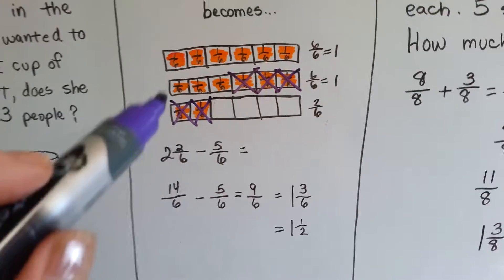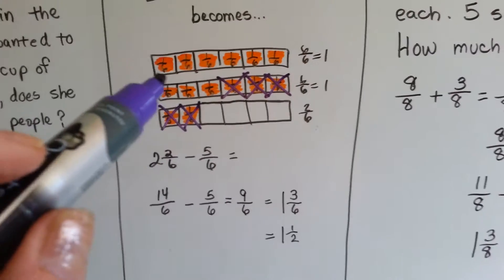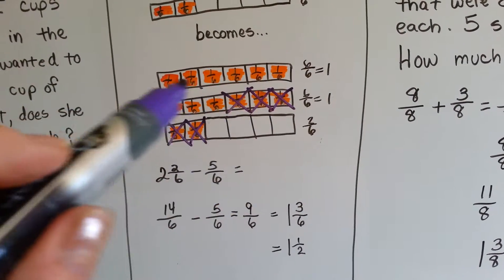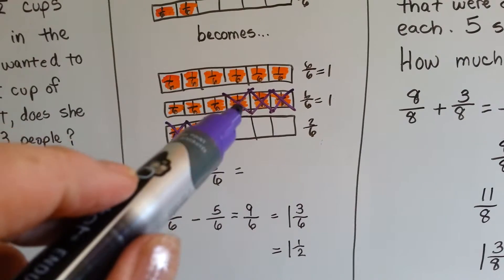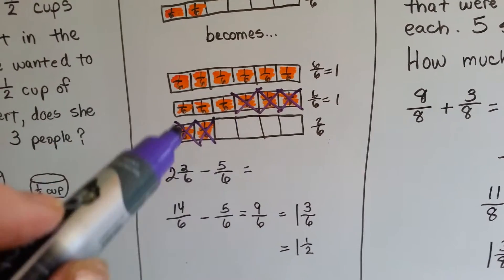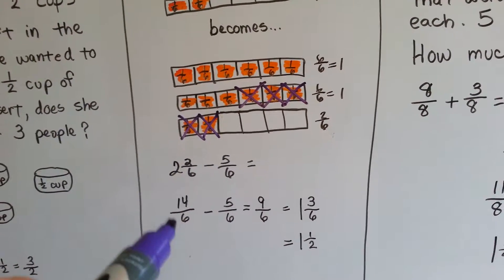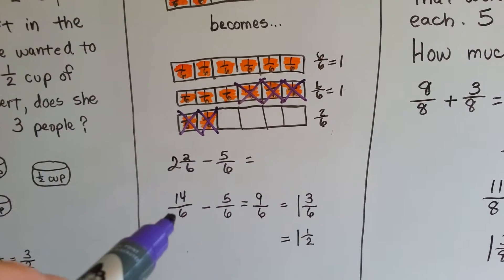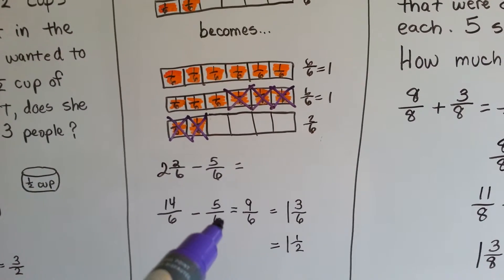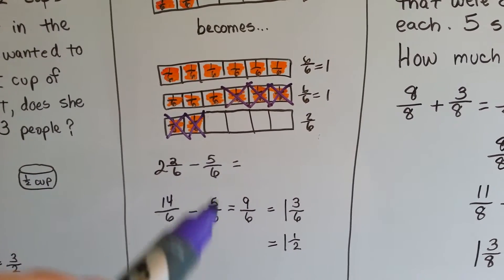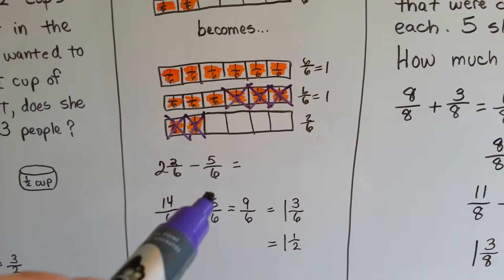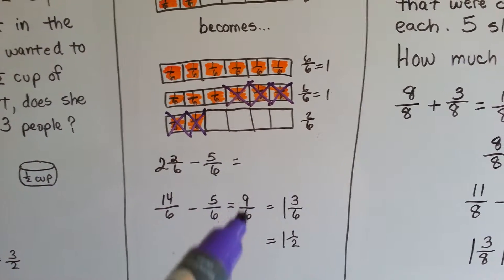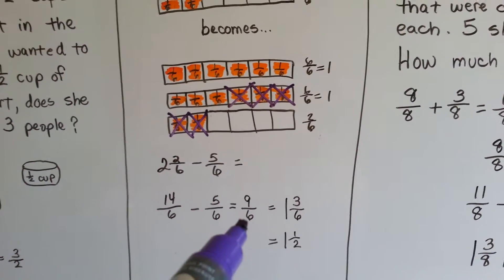Here's how. When we divided these all up into sixths, we had fourteen sixths — fourteen little one-sixth pieces. We took our five-sixths away. Fourteen take away five is nine, and we had nine-sixths left over.